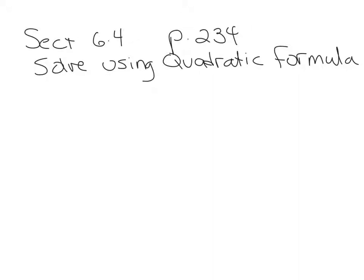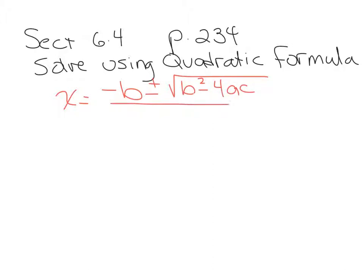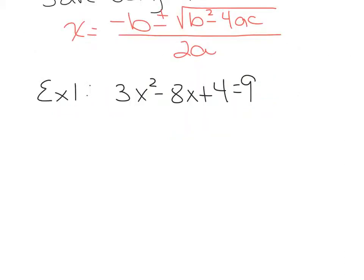We're working in intermediate algebra, section 6.4, starting on page 234. The topic is solving quadratic equations using the quadratic formula. The first thing we're going to do is define the quadratic formula: x equals negative B plus or minus the square root of B squared minus 4AC, all over 2A. A, B, and C are the coefficients of your quadratic equation when it is in standard form.